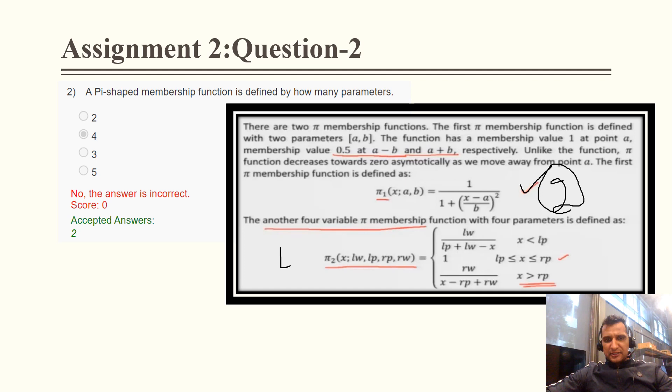But in this PI function, there are four parameters that exist. So I already told you that you can opt for option A or option B, but I opted for option B. That's why it is wrong, and they are considering only two parameters.